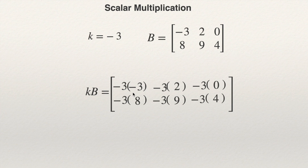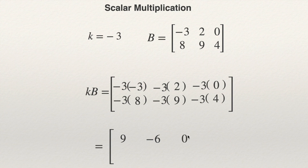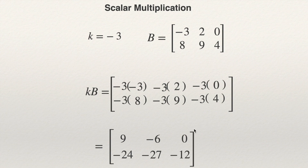The only thing I need to do now is make the operations. Minus 3 times minus 3 is 9. Minus 3 times 2 is minus 6. Minus 3 times 0 is 0. Minus 3 times 8 is negative 24. Negative 3 times 9 is negative 27. And negative 3 times 4 is 12. So this is the product of the scalar minus 3 times matrix B — another matrix of the same size as B.